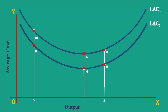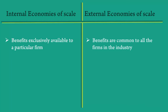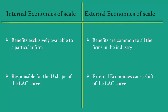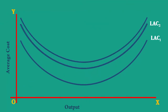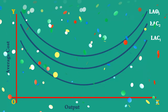Prevalence of such conditions will make the Long Run Average Cost Curve move in the upward direction. To summarize: internal economies of scale are exclusively available to a particular firm, whereas external economies are common to all firms in the industry. Internal economies of scale are responsible for the U-shape of the Long Run Average Cost Curve, while external economies cause a shift in the Long Run Average Cost Curve. The external economies of scale shift the LAC curve downward, and the external diseconomies of scale shift the LAC curve upward.